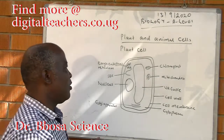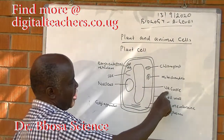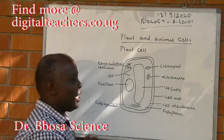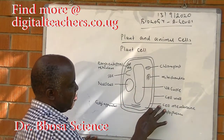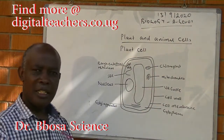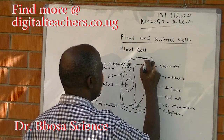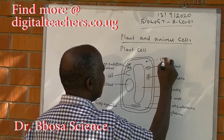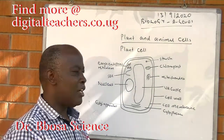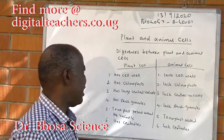You recognize that a plant cell has got all organelles found in animal cells. Then you add on a chloroplast, only found in a plant cell. A vacuole is only found in a plant cell, or a big vacuole — an animal may have a vacuole, but a small one. A cell wall is only found in a plant cell. You can also add starchy granules.